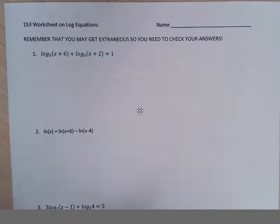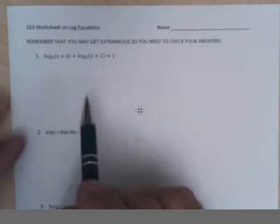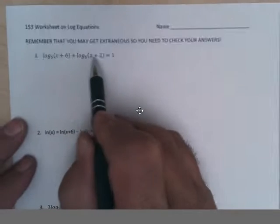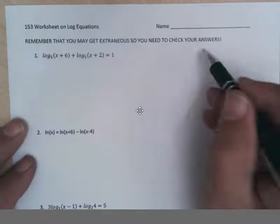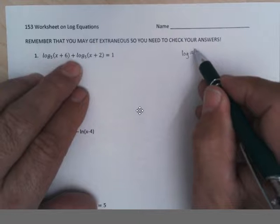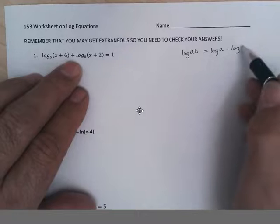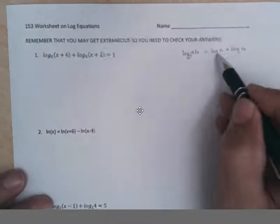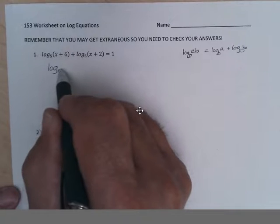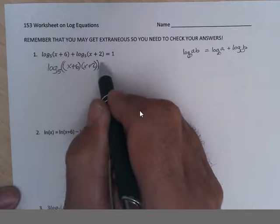Let's do the log equation worksheet. When we're doing these, we like to combine if we can this log into a single log. Log base 5 of this plus log base 5 of this. When it's plus, you multiply the arguments using the product rule. So this becomes log base 5 of x plus 6 times x plus 2 equals 1.